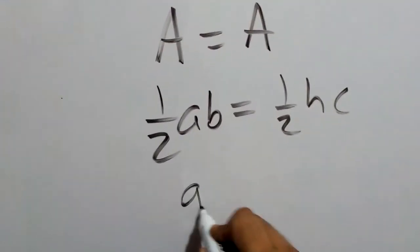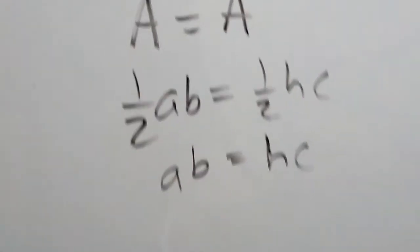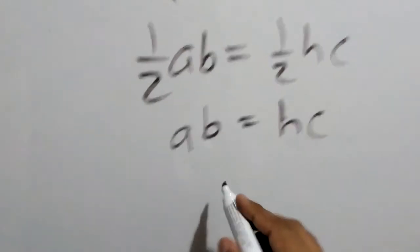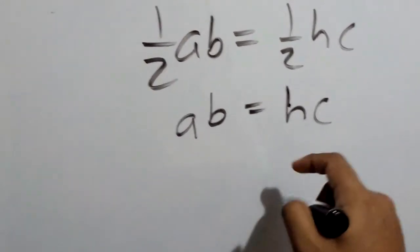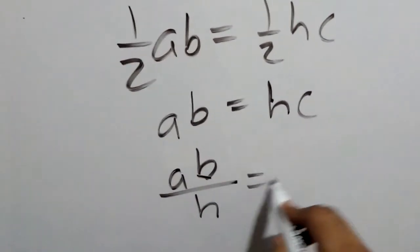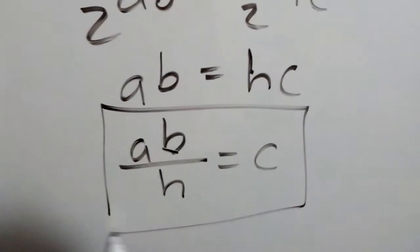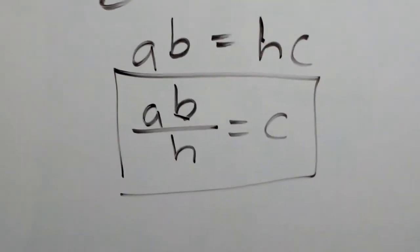And this is one half ab equals half hc. You can multiply by two on both sides and these twos divide, so you get this expression: ab equals hc. And if you clear for c, then you get ab over h equals c. This is important, let's save this here for a minute.